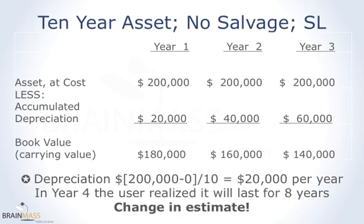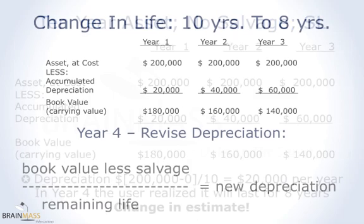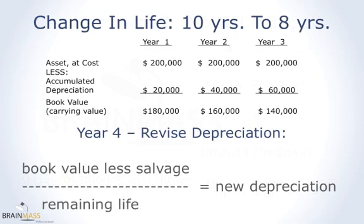Now, let's say in year four the user realizes the asset is going to last only eight years, not 10 years. That's a change in estimate. The revision to depreciation is made in the year you first realize the change is needed — you change it for that year and going forward. So in year four, you realize it's only going to last eight years, not 10. You take the book value less salvage in the numerator and the remaining life in the denominator.